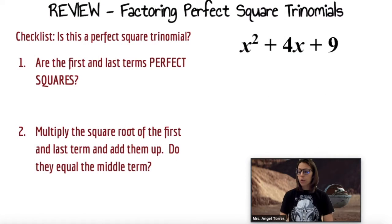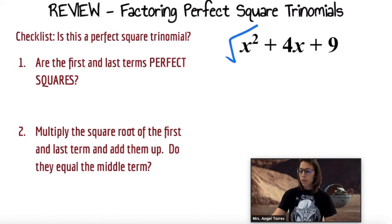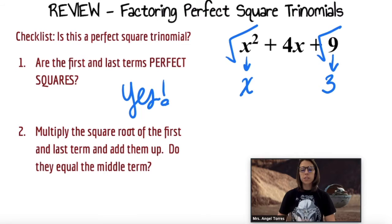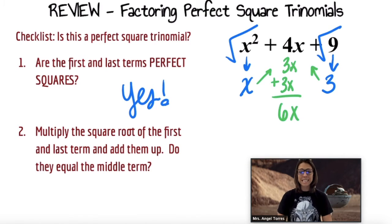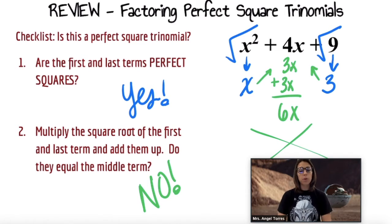Is this a perfect square trinomial? Checklist item number one: are the first and the last terms perfect squares? Square root of x squared is x. Square root of 9 is 3, so yes. On to checklist item number two. Multiply them together and see if they add up to the middle term. 3x plus 3x equals 6x. So because they do not add up to the middle term, this is not a perfect square trinomial and cannot be factored.